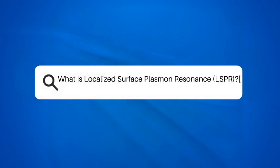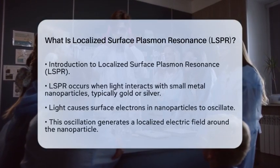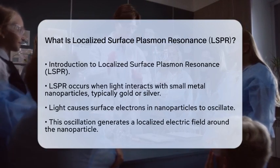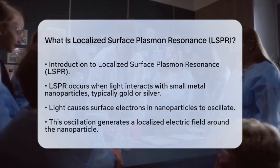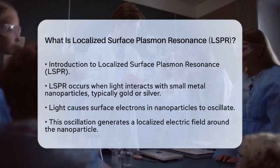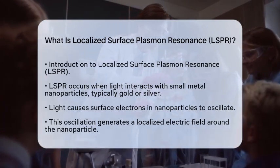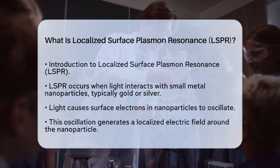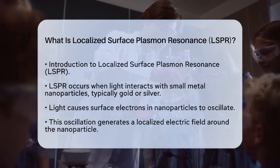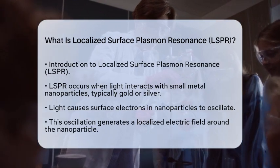What is localized surface plasmon resonance, LSPR? Have you ever wondered how tiny particles can have such a big impact on science? Today, we are going to talk about an exciting phenomenon called localized surface plasmon resonance, often shortened to LSPR. This optical effect occurs when light interacts with small metal nanoparticles, usually made of noble metals like gold or silver.